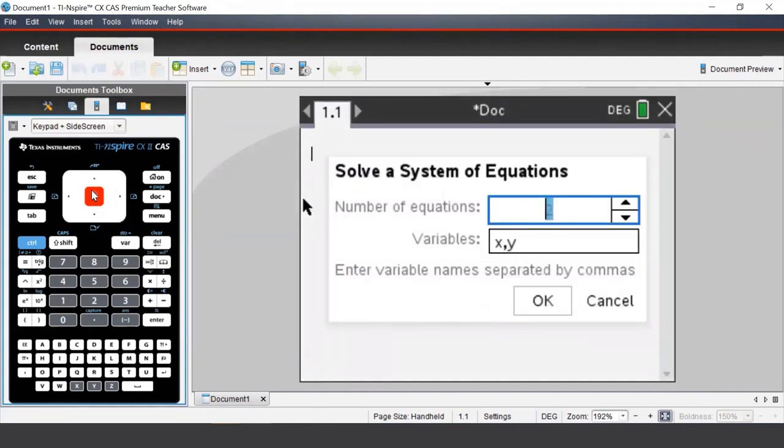In this pop-up menu we enter the number of simultaneous equations we will be working with and the variables we wish to solve for. We can press tab to navigate between our fields and when entering in our variables we need to put in a comma to separate our variables.